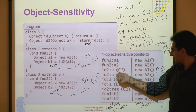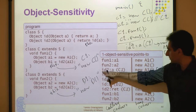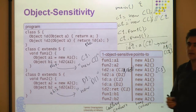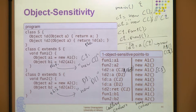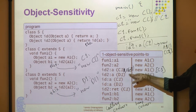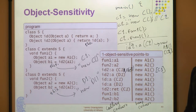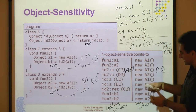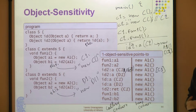For two-level object sensitivity, the first level of context is who's the receiver object of ID, and the second level would involve another object. There are different variations of object sensitivity for depths greater than one. The second level of context is not the receiver of the calling method — it's the object that allocated C1. There's no intuitive explanation for what the second one will be. For deeper than one, object sensitivity can become tricky — it's an advanced topic with conflicting definitions resolved only recently in a POPL paper.